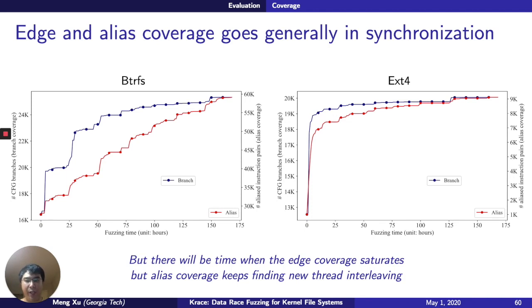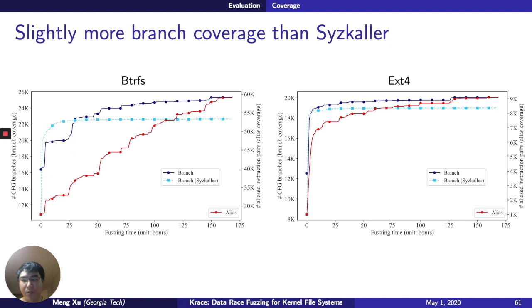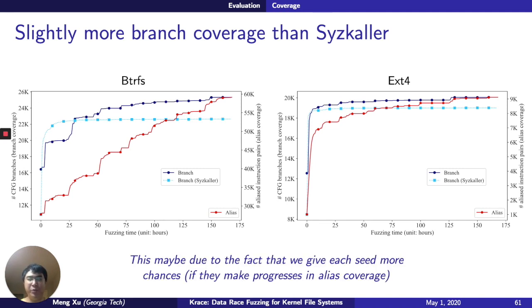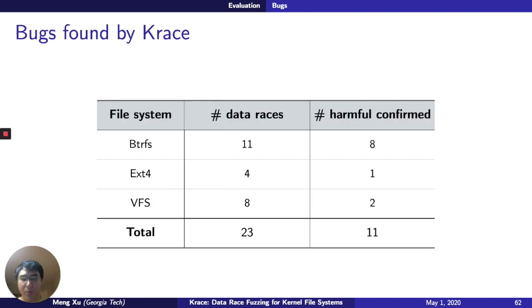The same saturation behavior doesn't apply as much to ext4 due to its lower concurrency level. Interestingly, by enabling alias coverage we also get slightly more edge coverage than syzkaller alone, possibly because we give each seed more time when it makes progress in alias coverage. Overall, we find 23 bugs across btrfs, ext4, and the virtual file system layer. Not all are confirmed by developers, but at least 11 have been confirmed as harmful, causing memory loss, invariant violations, kernel crashes, or performance degradations.